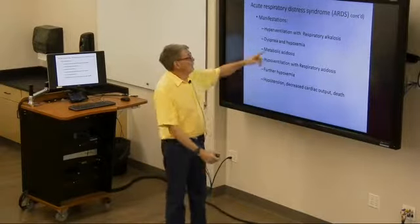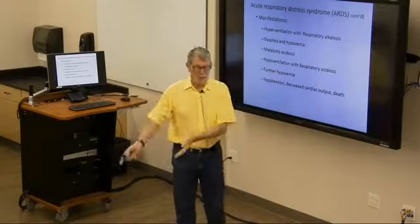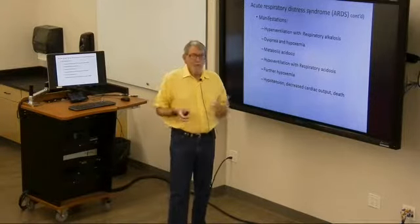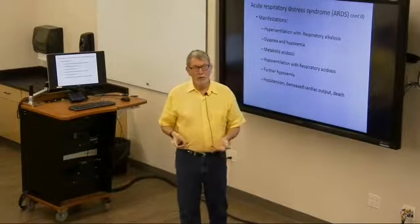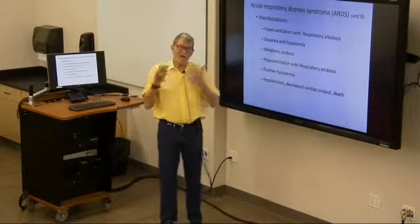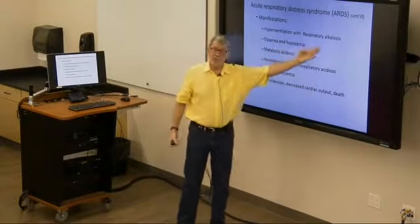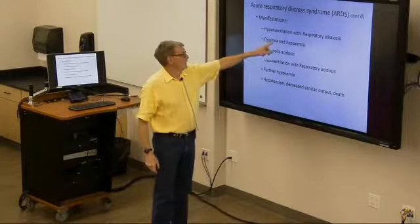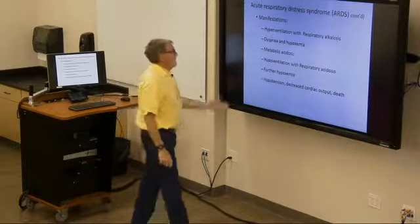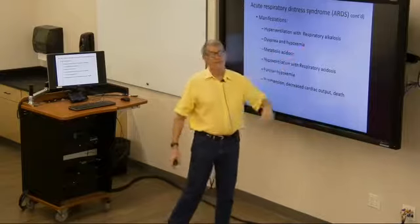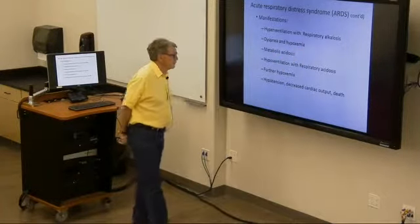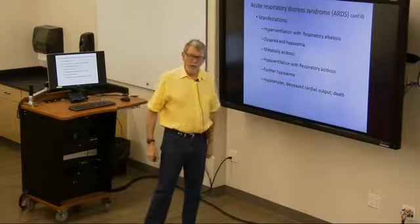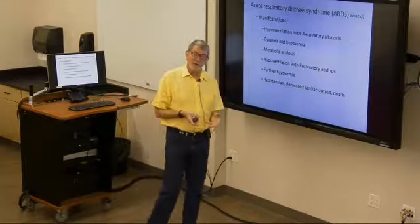Hyperventilation: if you have acute respiratory syndrome and you're not drowned, you're breathing fast but the air isn't going where it's supposed to. You're not oxygenating well, but CO2 — being very diffusible — is being removed fast enough that you become alkalotic, getting dizzy, faint, and sick. Dyspnea, hypoxemia, metabolic acidosis trying to compensate for the respiratory alkalosis. Hypoventilation leads to hypoxemia and decreased cardiac output because the heart isn't getting enough oxygen to function properly.